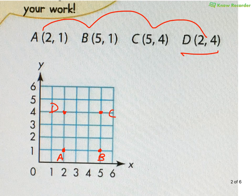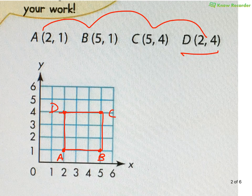Then I would use a ruler — but I don't have a ruler on this — to draw my lines straight. I go from A to B, B to C, C to D, and D back to A. Now I have to say what kind of shape I have. Obviously it's a quadrilateral, but I have to look at more of my properties. They're all right angles, so it's some kind of rectangle.